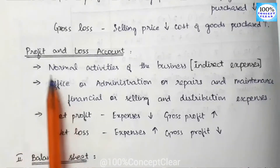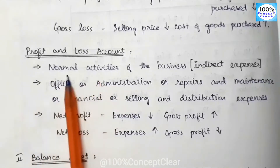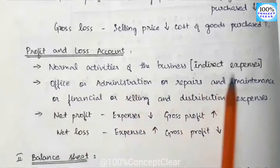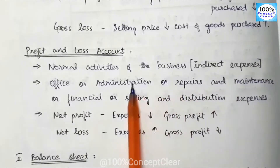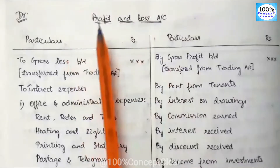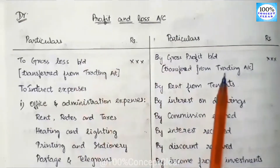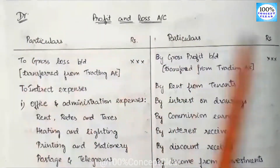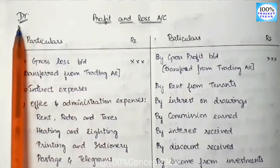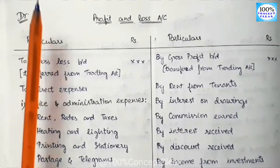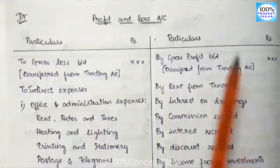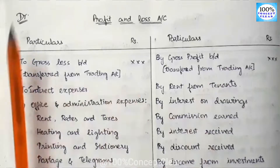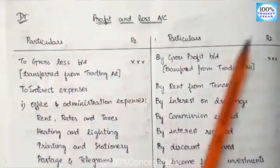This is the concept of the P&L account — it covers all normal business activities. We need to account for indirect expenses. Now let's look at the format of the P&L account. The P&L account has a debit side and a credit side. On the debit side we record expenses, and on the credit side we record any income.